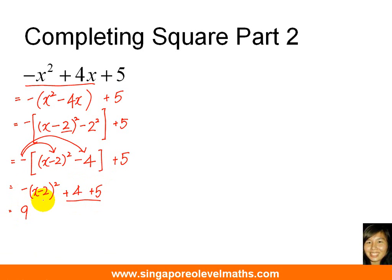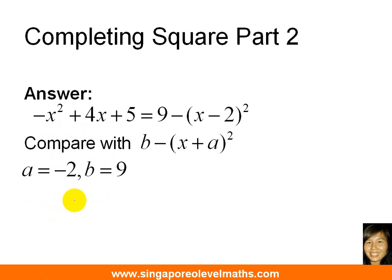I'll usually put the positive term in front so that it looks nicer, and anyway that was the form that the question asked for. So we are done with the completing the square for this question. Now let us compare it with the original question itself. You notice that this was what we have as the answer, and comparing with what was given in the question, we can conclude: A has the value of minus 2, and B has the value of 9.